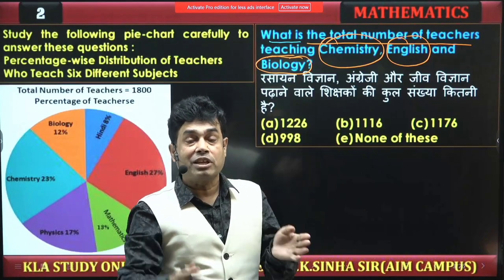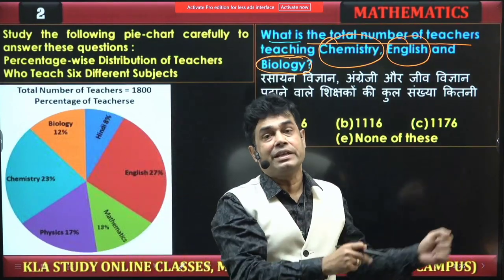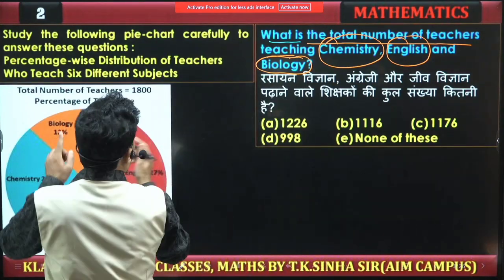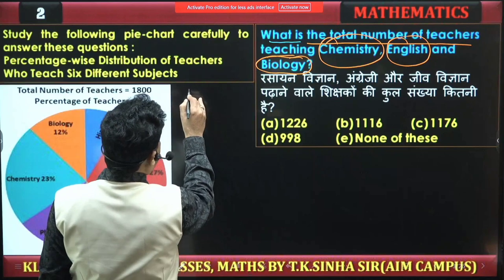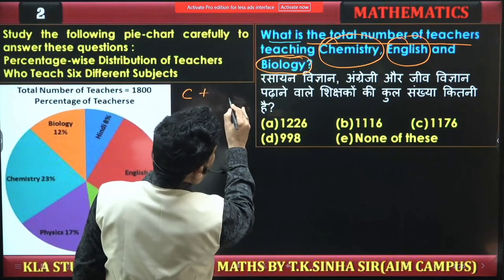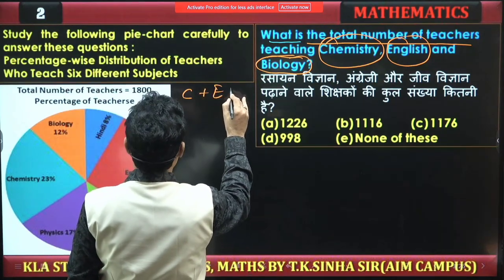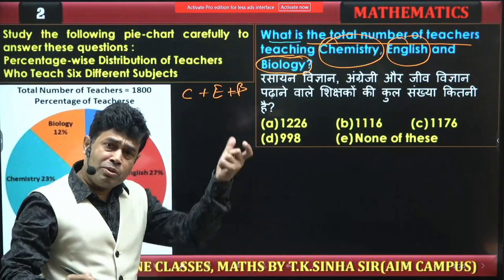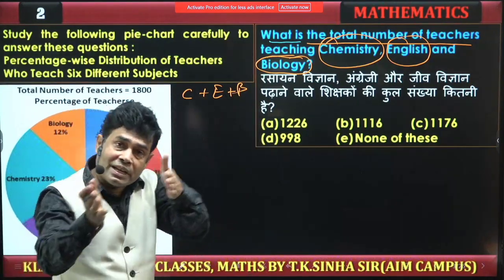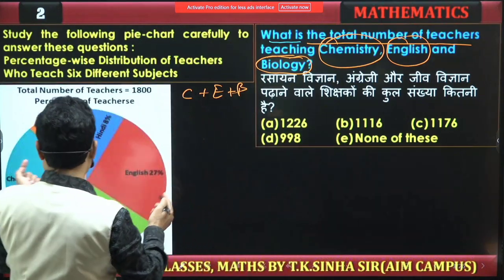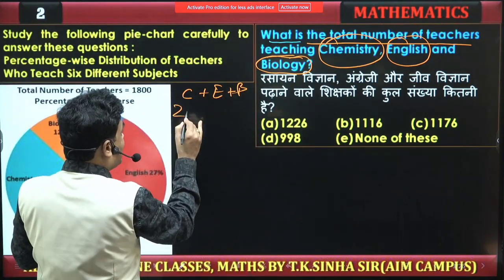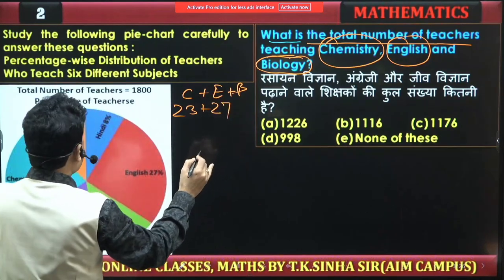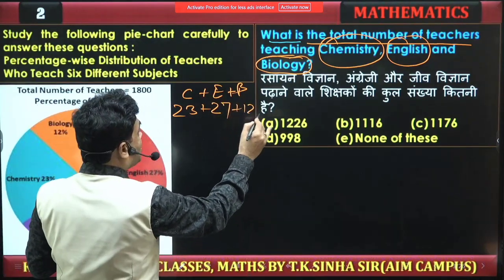One way is that three subjects are different. Or, the other way is that which subject is chemistry, plus which one is English, plus the third is bio. So, this is the three subjects — you can write three subjects. And you can add the percentage of the three subjects. How much is chemistry? 23. How much is English? 27. How much is bio? 12.